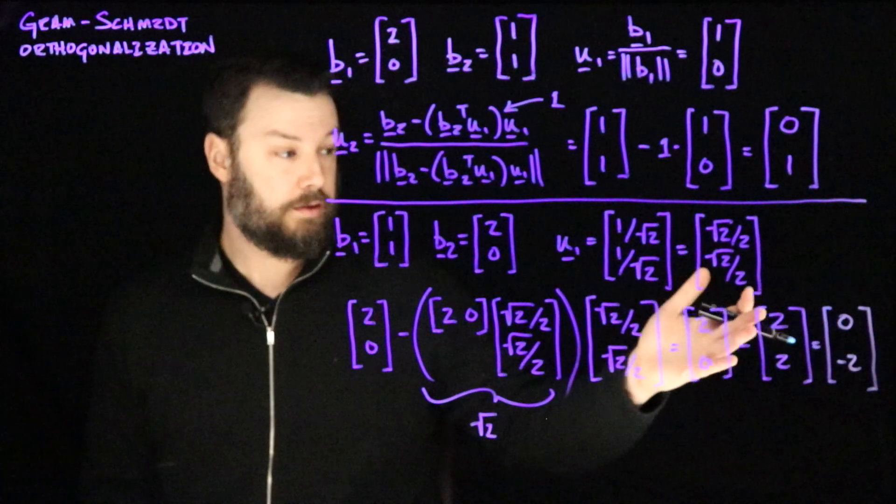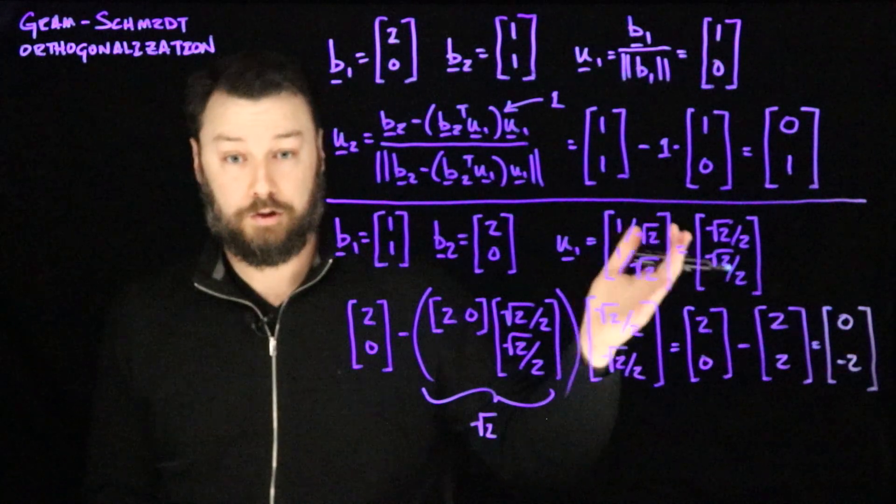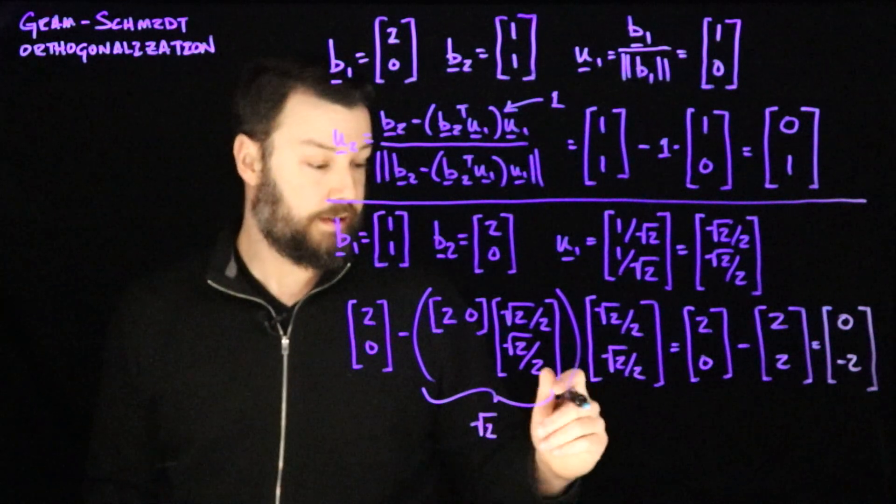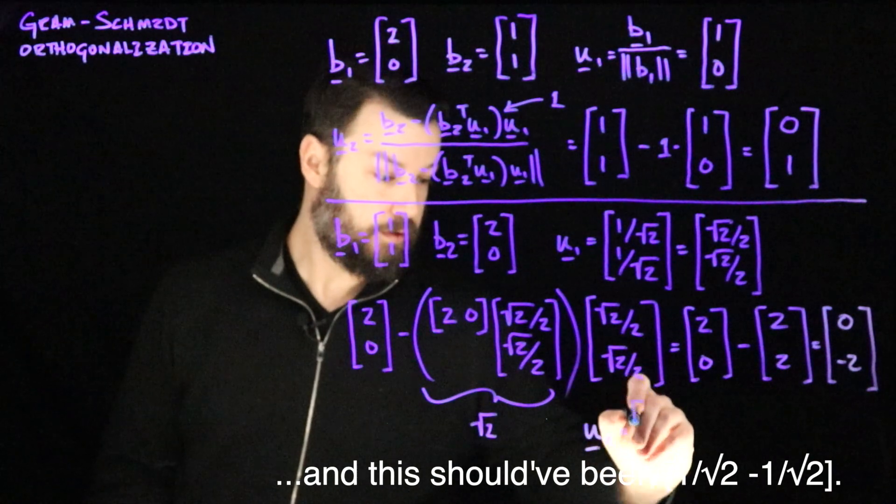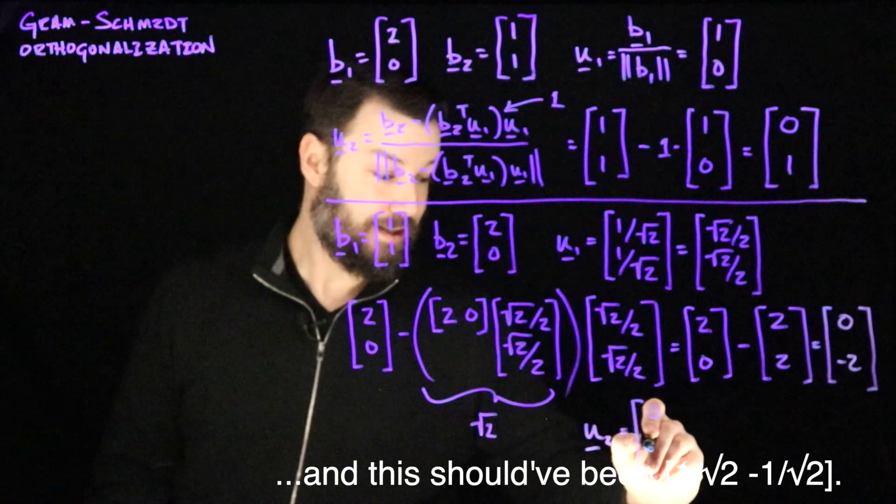Now when we normalize that, its length is 2. And so if we divide that out, then our u2 is 0, negative 1.